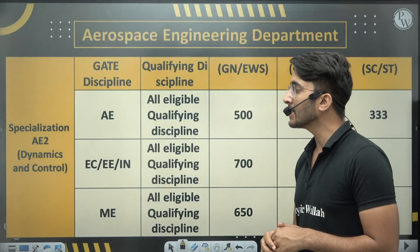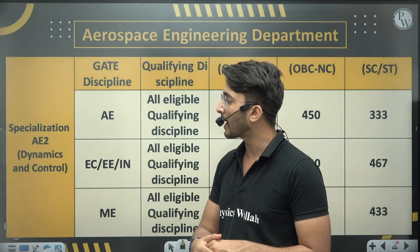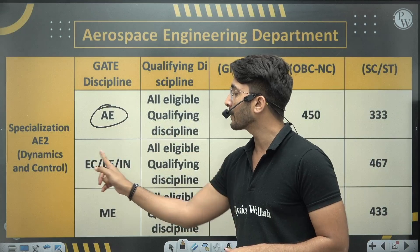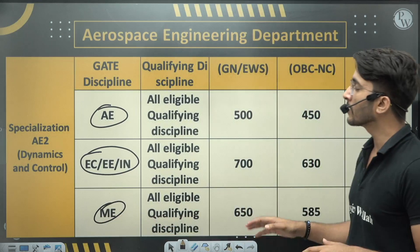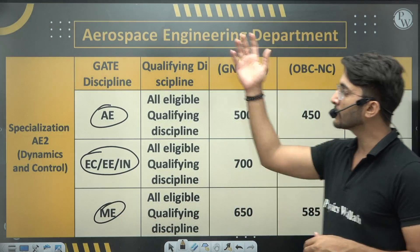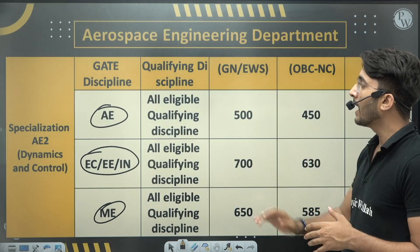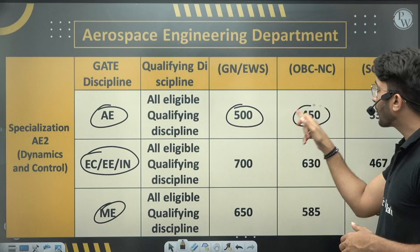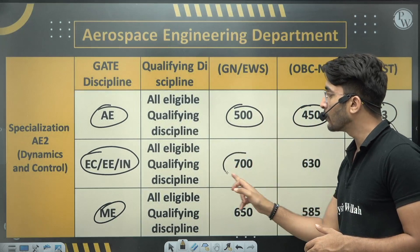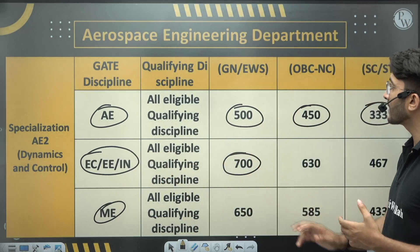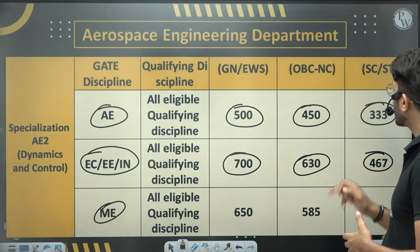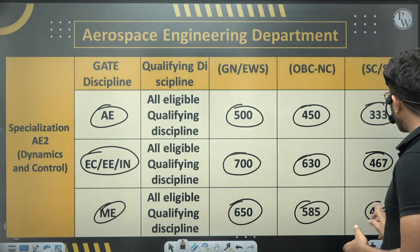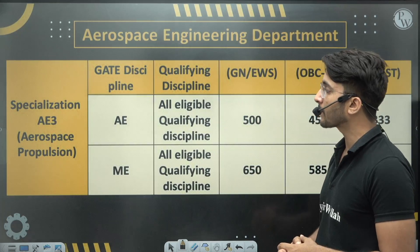For the second specialization — Dynamics and Control in the Aerospace department — GATE papers in AE, EC, Electrical, IN, or ME make you eligible. Graduation can be in any discipline. For General/AWS with AE paper, 500 is the minimum GATE score; OBC 450; SC/ST 333. For EC/Electrical/IN, General/AWS requires 700, OBC-NCL 630, SC/ST 467. For Mechanical: General/AWS 650, OBC-NCL 585, SC/ST 433.